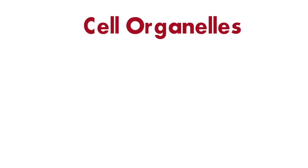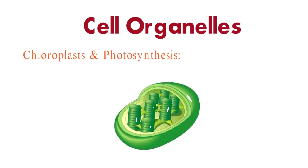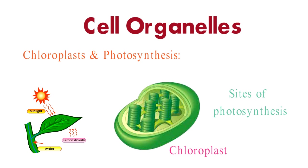In plant cells, we have chloroplasts, which are green-colored organelles. These are the sites of photosynthesis, a remarkable process where sunlight, carbon dioxide, and water are converted into glucose and oxygen, providing energy for the plant.